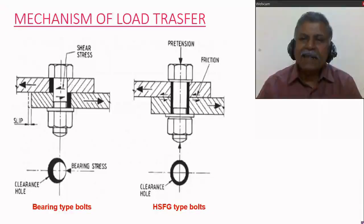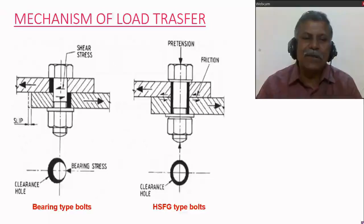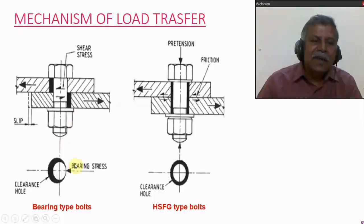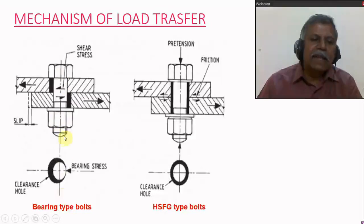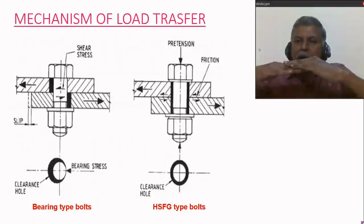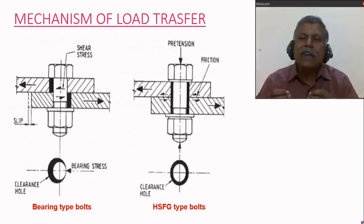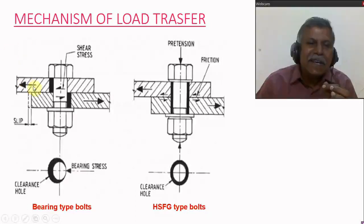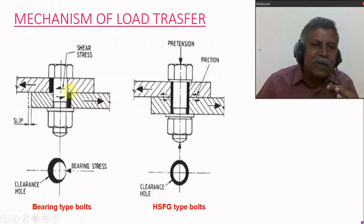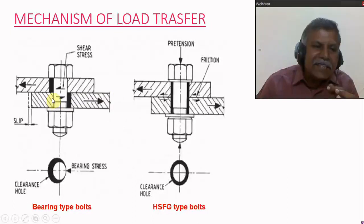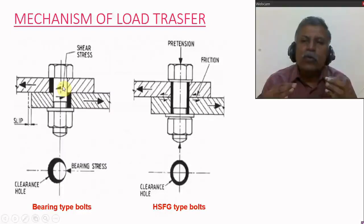Based on the load transfer mechanism, bolts can be classified into two types: bearing type bolt and friction type bolt. In bearing type bolt connections, considering two plates joined by a bolt, the bearing type bolt will allow a small slip. Due to the force applied, the plates touch at the bottom and the plate stretches with the bolt, allowing a small slip.